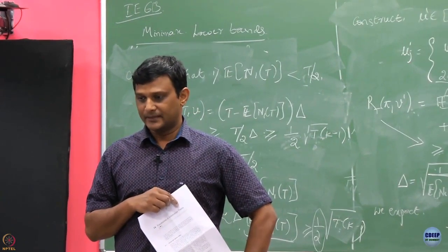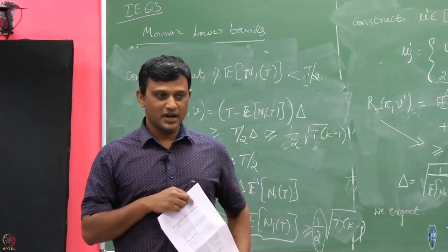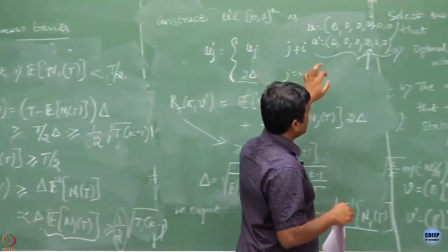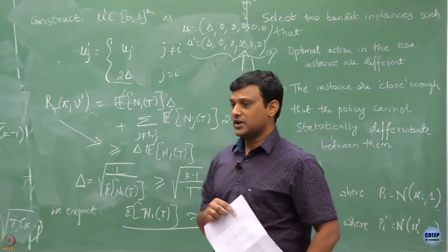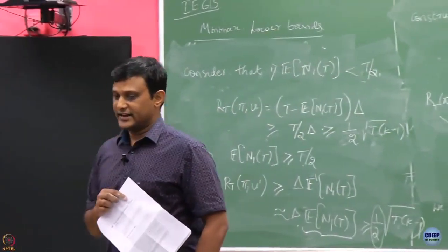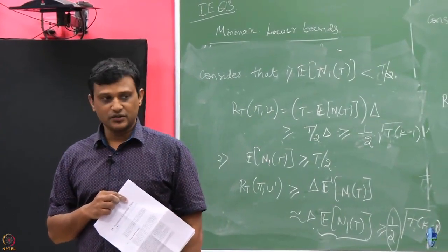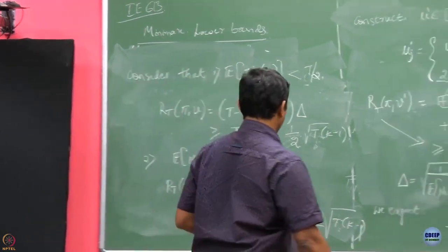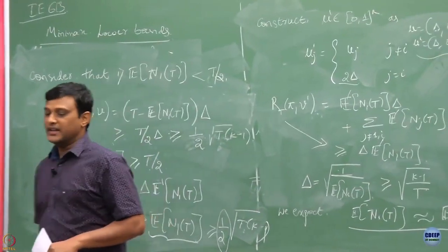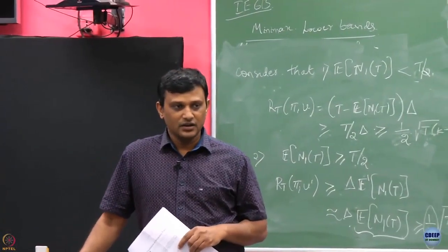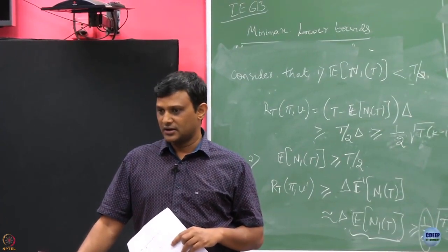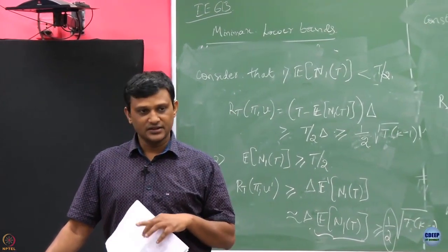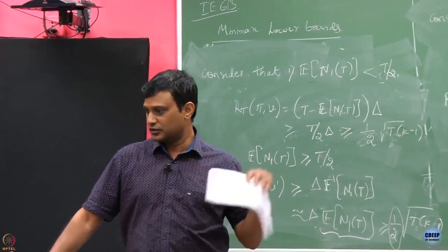So what is happening is we are able to argue that if our algorithm confuses one instance with the other, the regret is going to be order sqrt(TK) on these two instances. Now we have to make this a bit more formal. For this we need some information-theoretic quantities and bounds based on them. I will introduce them in today's class and in the next class we will go through the steps formally.